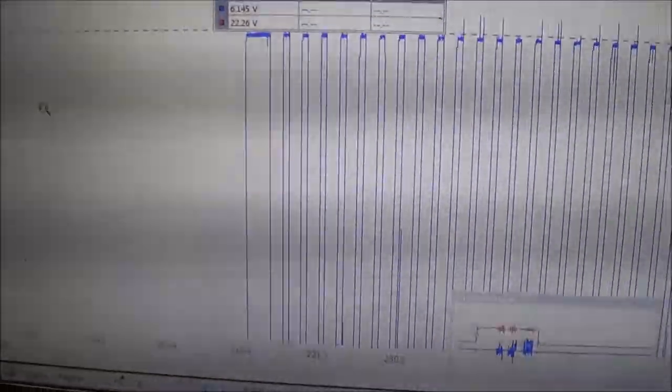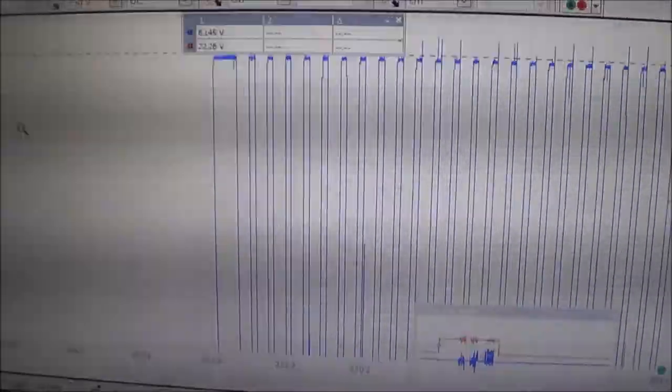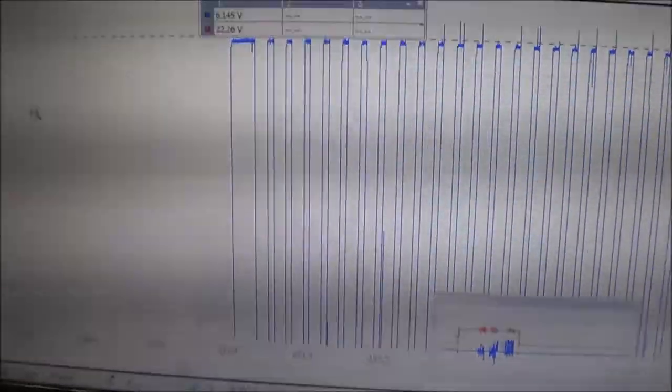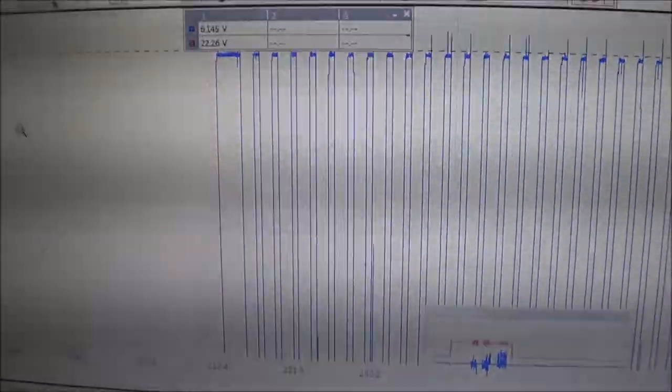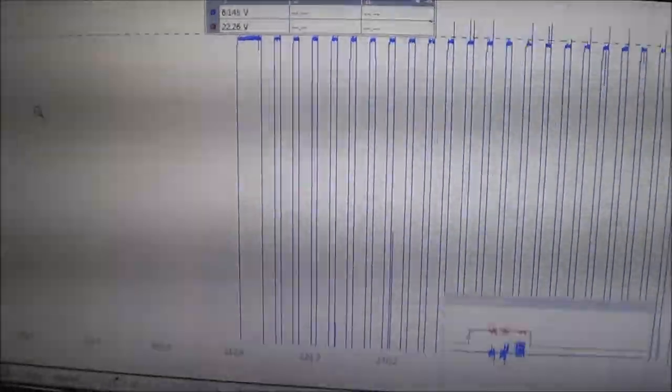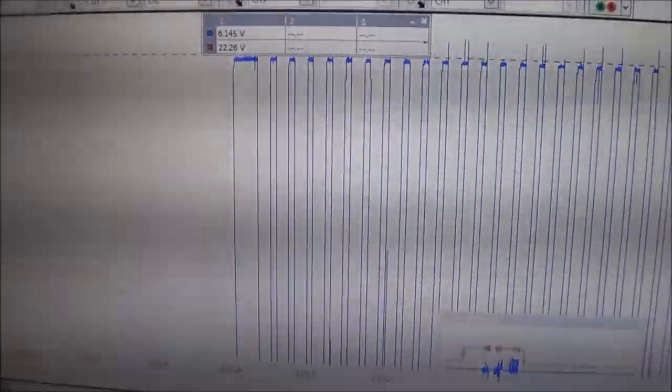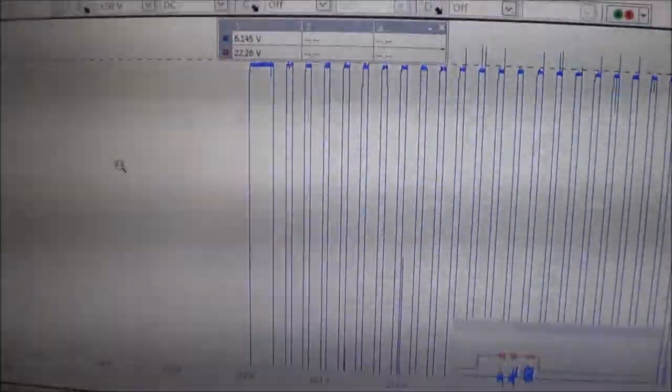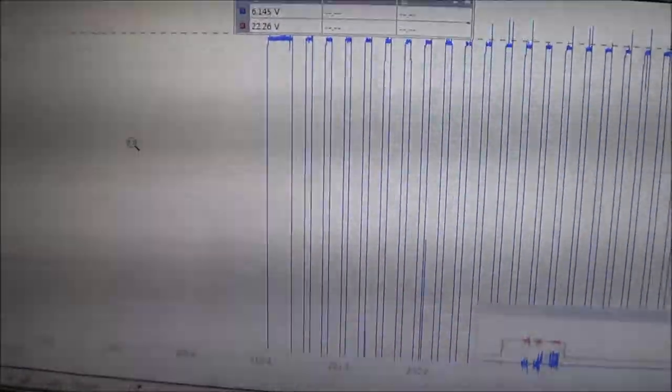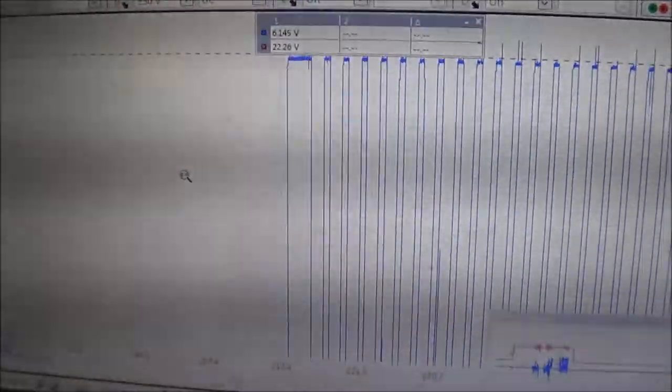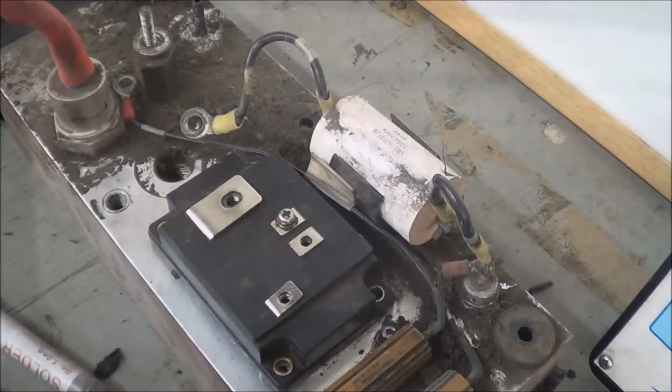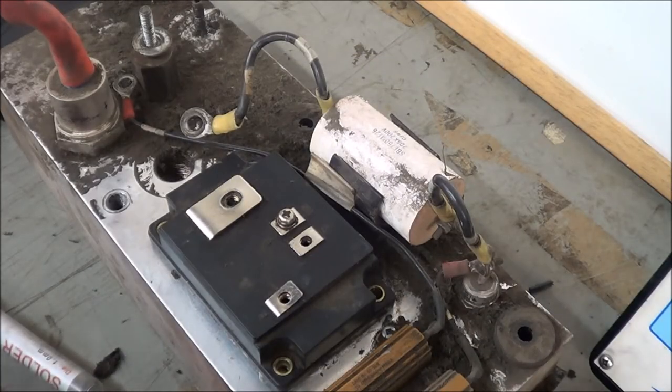But for now, we're just going to have to replace the Q1, but also test the other components. Because usually when a Q1 blows, it could be blown just by age or heating, but more often than not it's going to be external factors. So we have to test all the other components that are associated with this Q1, like the REC1 and the capacitors and the diodes, which is part of the snubber circuit for this Q1 transistor.